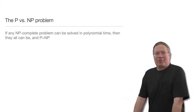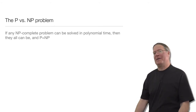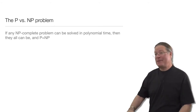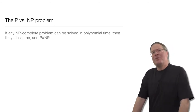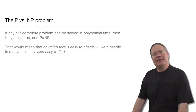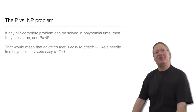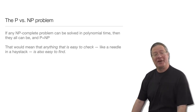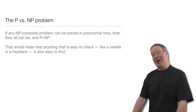If any NP-complete problem can be solved in polynomial time, then they all can be, and P and NP are the same. What would this mean? It would mean literally that anything which is easy to check, easy to confirm, is also easy to find.